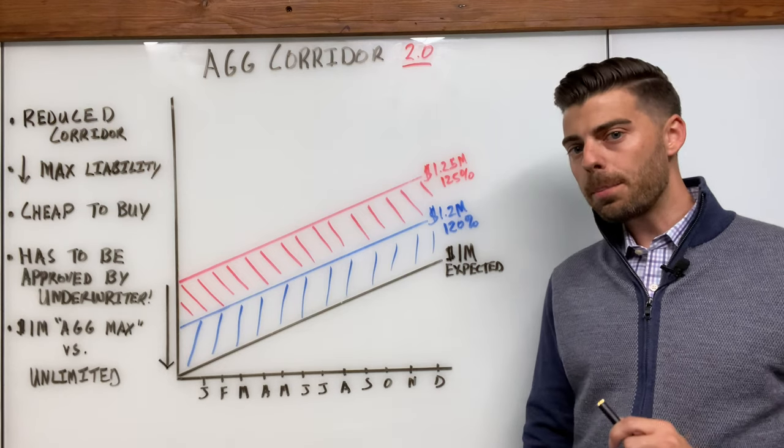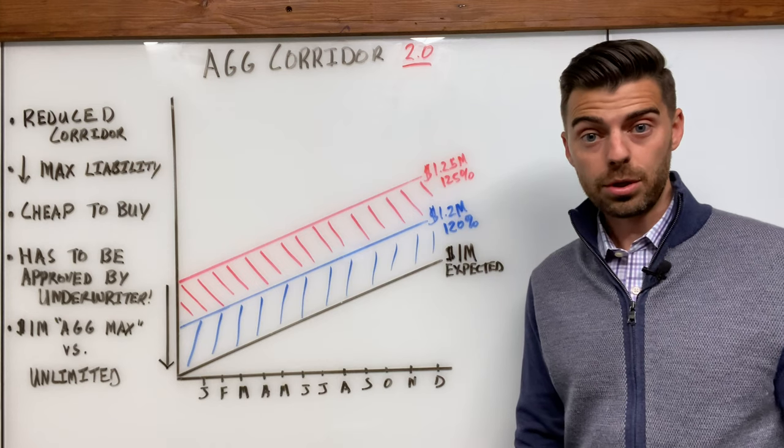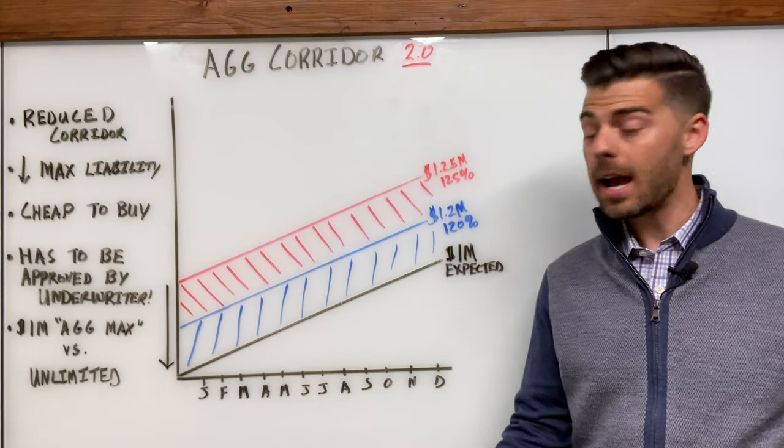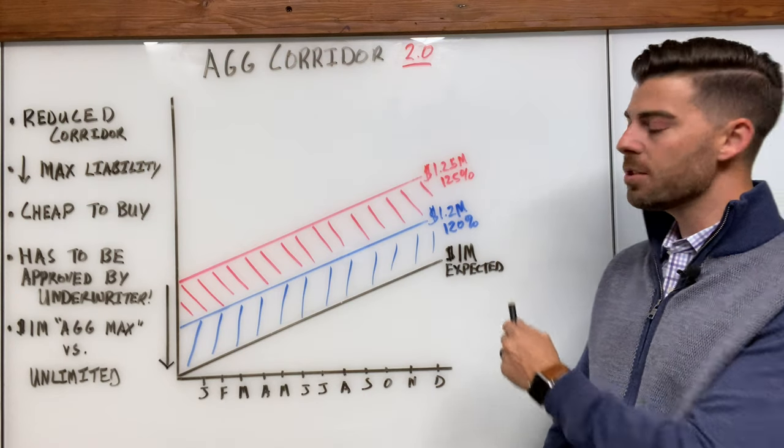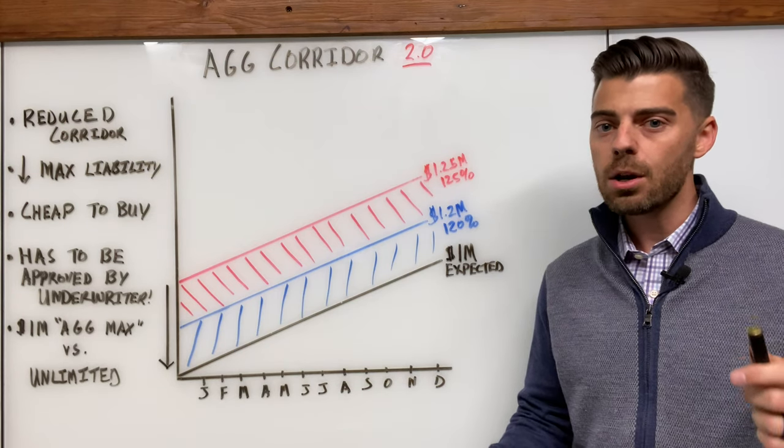Well, not a lot of people know that you can actually negotiate a reduced corridor. Ah, surprise! Yeah, you don't have to stick with that 125% corridor anymore. That's right. You have some more arrows in your quiver.